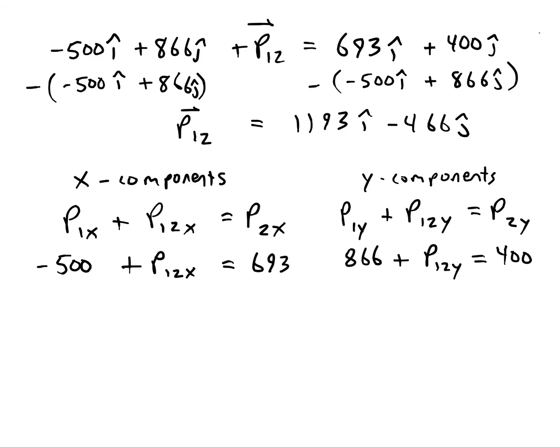In the end you get P12x is 1193 and P12y is negative 466. So now we've got to find the magnitude P12. We put these lines around it to show that we're trying to find the length now of that displacement vector.